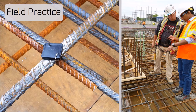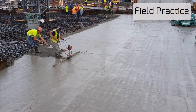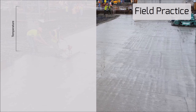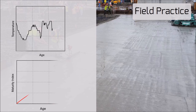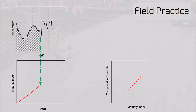In actual field practice, temperature sensors are placed at different locations within the concrete element, selected based on the vulnerability of the element to failure at the time of formwork removal. Measurements begin as soon as concrete is placed in the formwork — known as the pouring time. Temperature variations are monitored during curing, and based on the temperature history and datum temperature, the maturity index can be measured at any given time to predict early age strength.